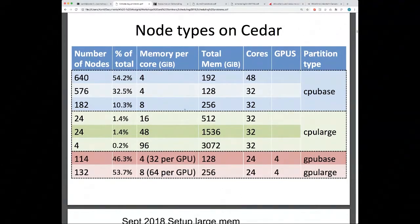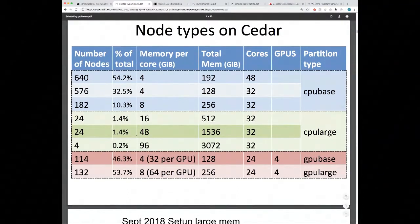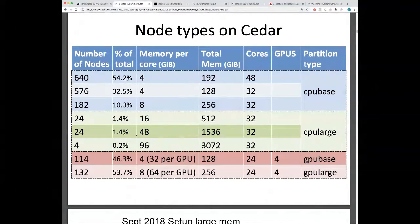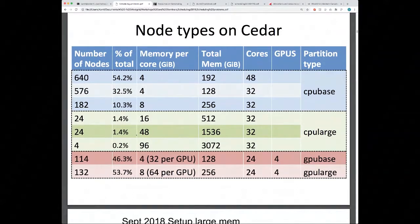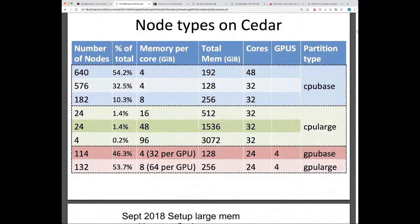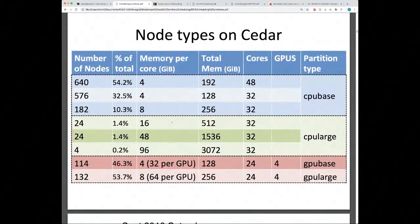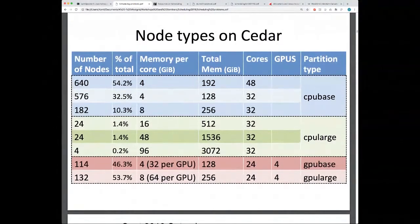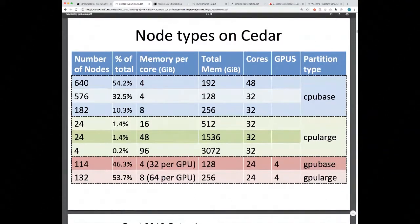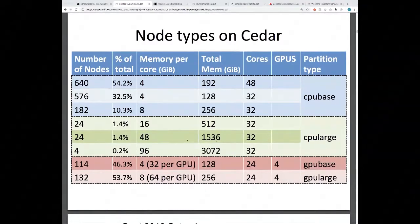Even among large memory nodes there is a big difference. There are 24 nodes with 16 GB per core (0.5 TB total), another 24 nodes with 48 GB per core (1.5 TB), and only 4 nodes — 0.2% of the entire cluster — with 96 GB per core (3 TB). If you're asking for large amounts of RAM, the number of available nodes is very limited. Only request what you actually need, especially when crossing these memory boundaries.